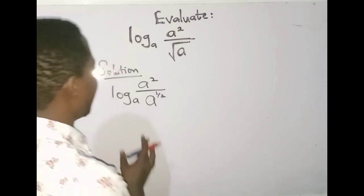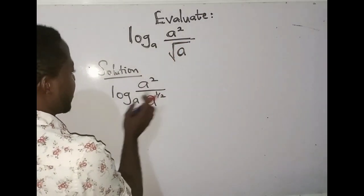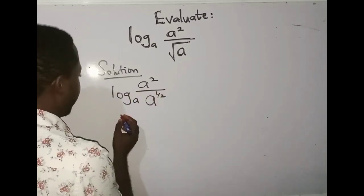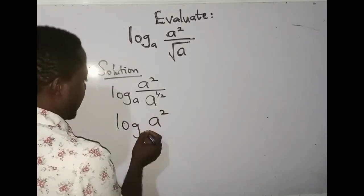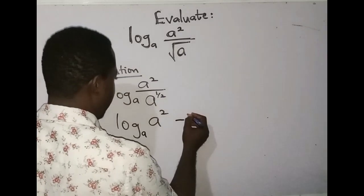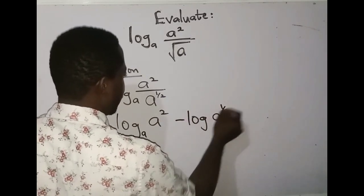Now, the next thing to do is to apply the division rule of logarithms. The division rule says whenever you are dividing, the sign will change to minus. So I'm going to have log_a(a²) minus log_a(a^(1/2)).